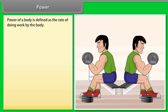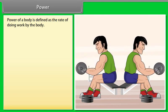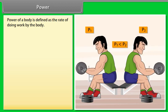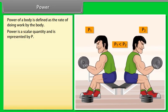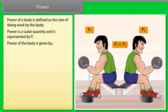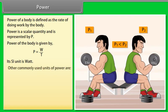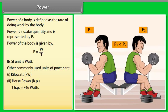Power. Power of a body is defined as the rate of doing work by the body. Let us take an example: a boy doing exercise by using dumbbell. When he used the dumbbell of 5 kg, then he applied power P1, and when he used the dumbbell of 10 kg, then he applied power P2. Hence the power rating is high when he used the dumbbell of 10 kg as compared to the dumbbell of 5 kg. Power is a scalar quantity and is represented by P. Power of a body is given by P equals W upon T. Its SI unit is Watt. Other commonly used units of power are kilowatt and horsepower. One horsepower is equal to 746 watts.